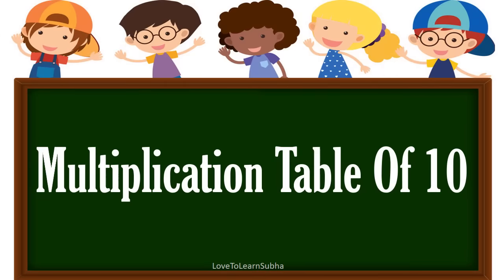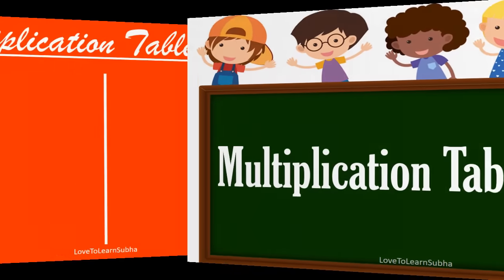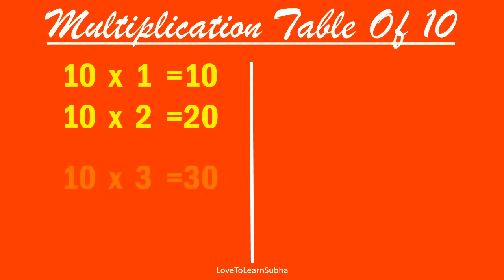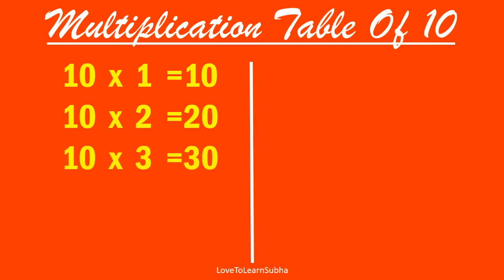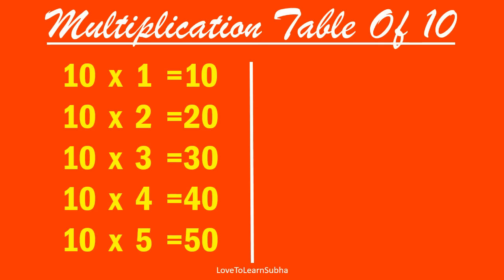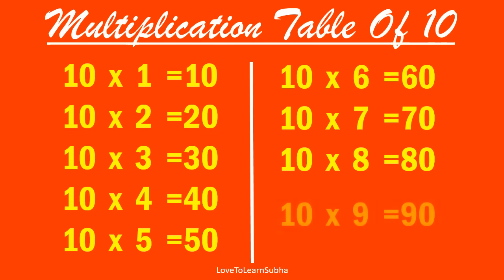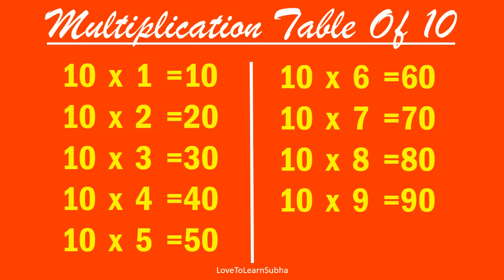Multiplication table of 10. 10 one is 10, 10 two is 20, 10 three is 30, 10 four is 40, 10 five is 50, 10 six is 60, 10 seven is 70, 10 eight is 80, 10 nine is 90, 10 ten is 100.